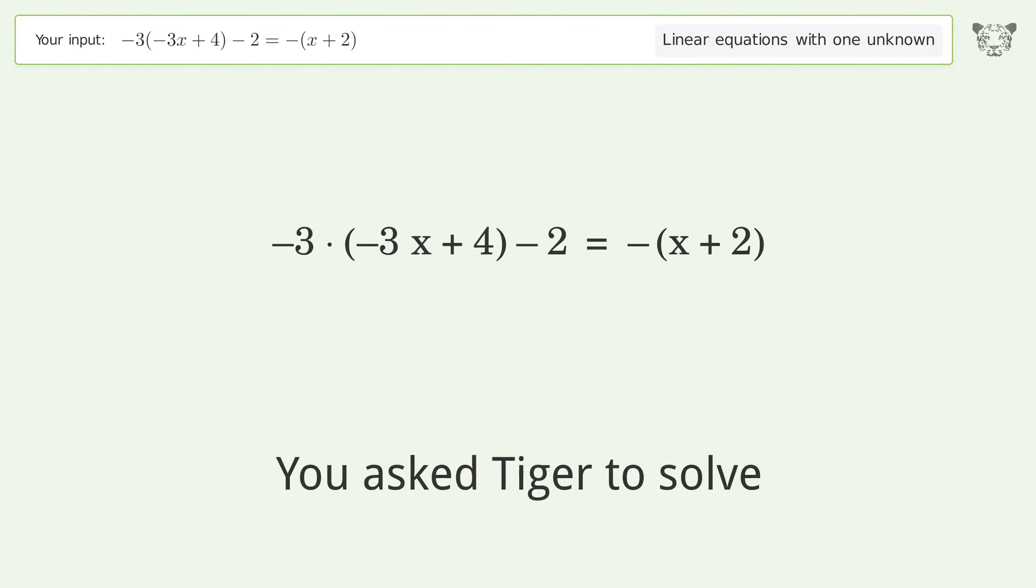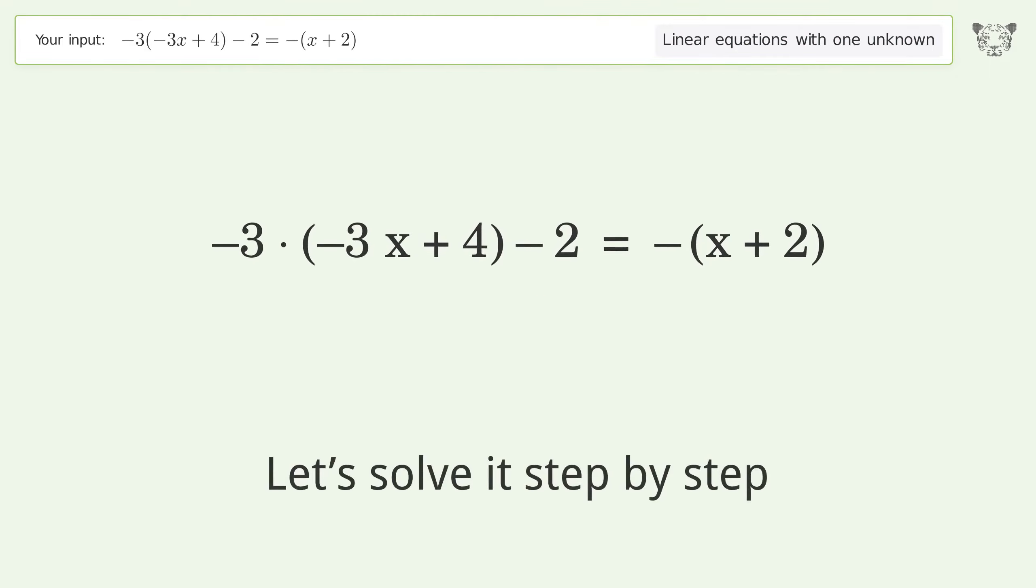You asked Tiger to solve this linear equation with one unknown. The final result is x equals 6 over 5. Let's solve it step by step. Simplify the expression.